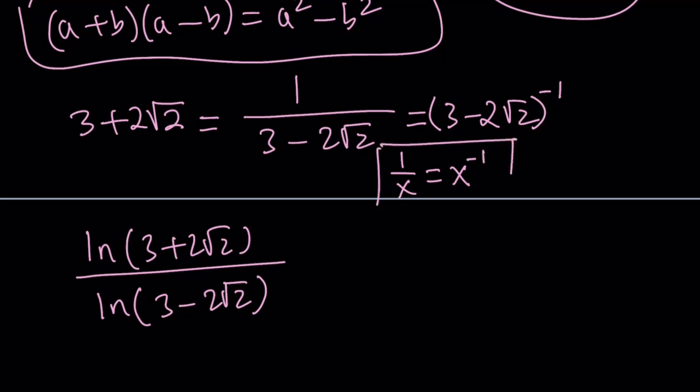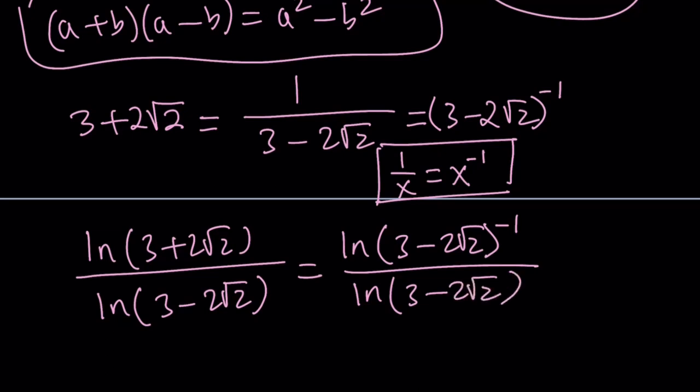So, let's go ahead and plug this in here. Let's replace 3 plus 2 root 2 with 3 minus 2 root 2 to the power negative 1, and then divide it by ln 3 minus 2 root 2. Now, notice that the arguments for both of these log functions is the same, except the top one has an exponent.